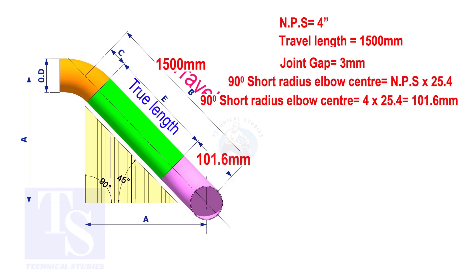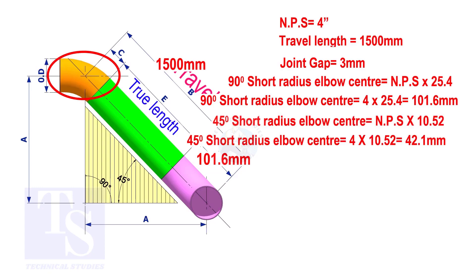To calculate the elbow center of a 45 degree short radius elbow, multiply the nominal pipe size by 10.52. The answer is 42.1mm.